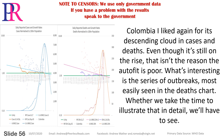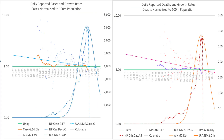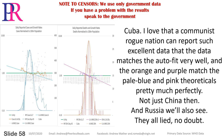Colombia — I liked again for its descending cloud in cases and deaths. Even though it's still on the rise, that isn't the reason that our autofit is poor. What's interesting is the series of outbreaks most easily seen in the deaths chart. Whether we take the time to illustrate that in detail, we'll have to see. Cuba — I love that a communist rogue nation can report such excellent data that the data matches the autofit very well and the orange and purple match the pale blue and pink theoreticals pretty much perfectly. Not just China then, and Russia will also see. They all lied, no doubt.